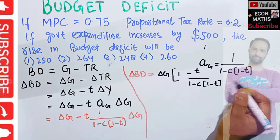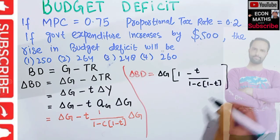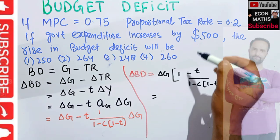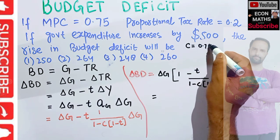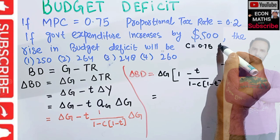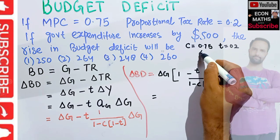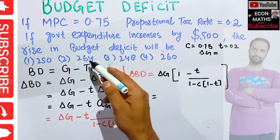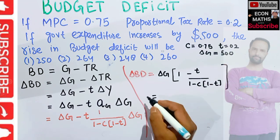We are given: marginal propensity to consume is 0.75, proportional tax rate is 0.2, and change in government expenditure is 500. Let's plug these values into our formula.